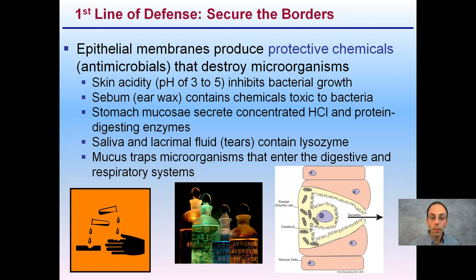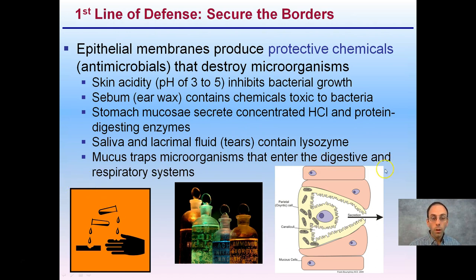Keep in mind that our digestive tract, such as our stomach, can produce hydrochloric acid at a very low pH, sometimes around pH 2. Sebum and earwax also contain chemicals that are toxic to bacteria. Saliva and tears contain lysozymes as well. Mucus traps microorganisms that enter the digestive and respiratory systems. Our body has many of these physical ways to combat potential invaders.